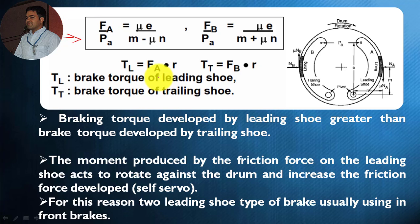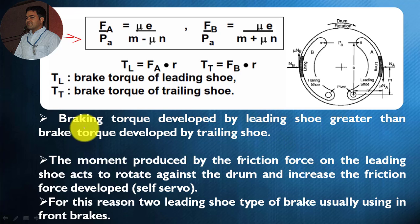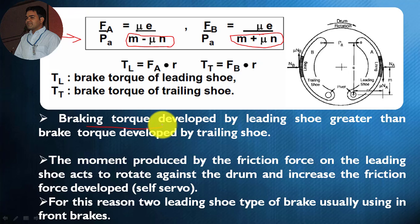With the help of brake force we can also calculate the brake torque for each shoe. The brake torque for the leading shoe is Dl equals Fa times r, and likewise the brake torque for the trailing shoe is Fb times r. The braking torque developed by the leading shoe is greater than the brake torque developed by the trailing shoe. By observing the denominators for both Fb and Fa, we can say that the breaking force in case of a leading shoe is greater than the braking force in the trailing shoe, and that's why the brake torque developed by the leading shoe is greater.